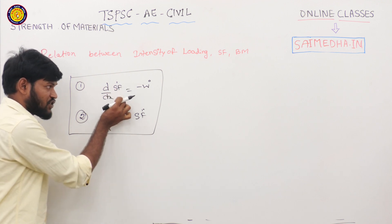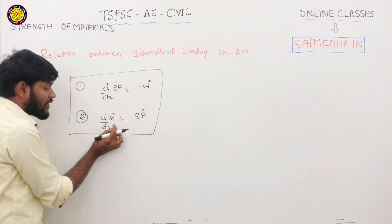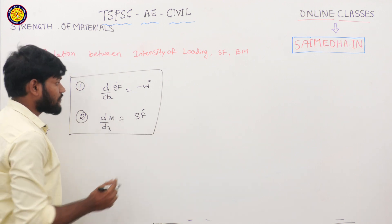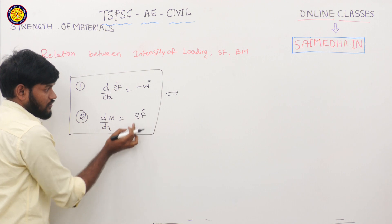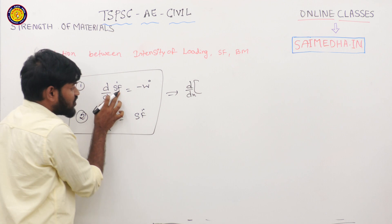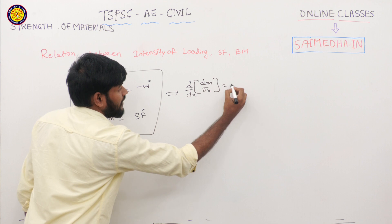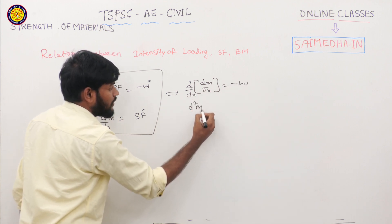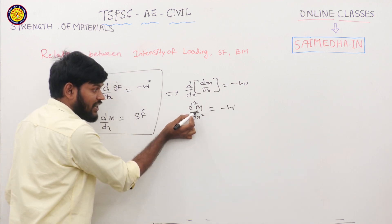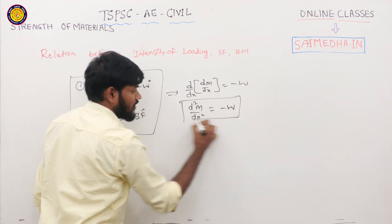The first relation is: the rate of change of shear force equals intensity of loading at that section. The second: the rate of change of bending moment gives the shear force at that section. Mathematically, dM/dx = minus w, and d²M/dx² = w. So the double derivative of bending moment at any section gives the intensity of loading at that section.